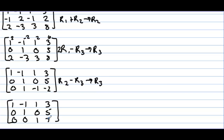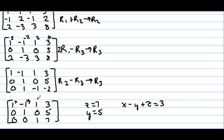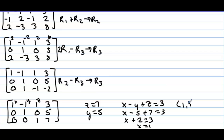So z = 7. Looking at the second row, we have a bonus zero, so y = 5. In the first row, x − y + z = 3. Plugging in y = 5 and z = 7: x − 5 + 7 = 3, so x + 2 = 3, x = 1. The solution is (1, 5, 7).